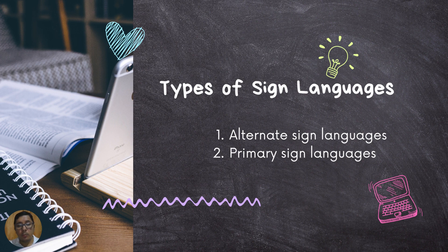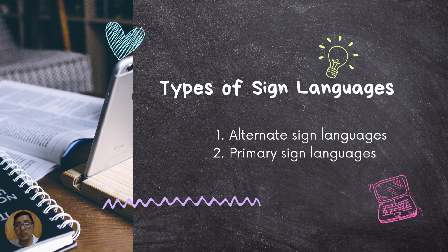Primary sign languages, on the other hand, are the first languages of groups of people who do not use spoken language for communication. Examples include British Sign Language and French Sign Language, used within deaf communities in Britain and France. It is important to know that primary sign languages are not mutually intelligible.